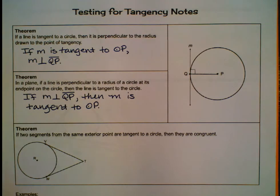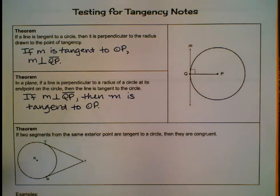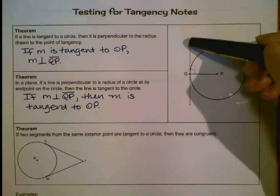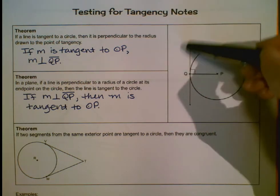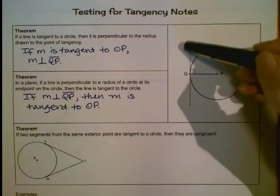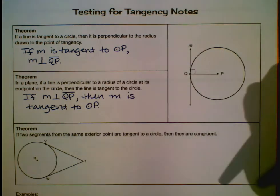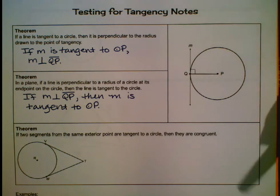One thing is going to be given. Either these two are perpendicular, and you make the conclusion that the line must be a tangent line. Or, given that the line is tangent, then somehow use the fact that these must make a right angle — they must be perpendicular.